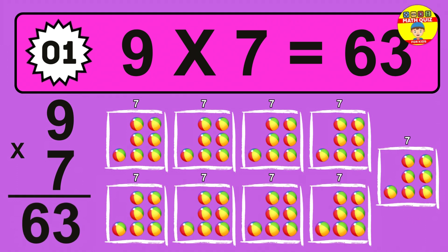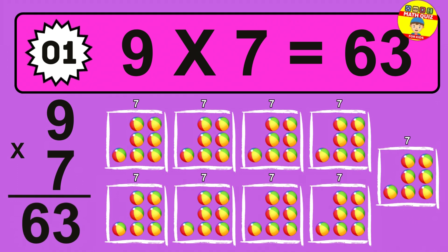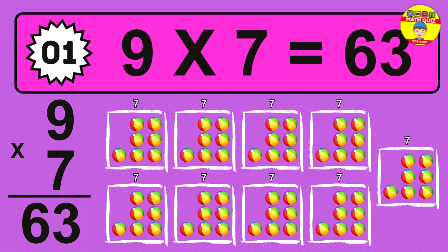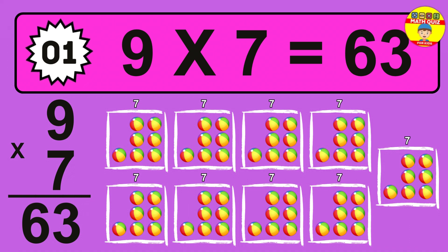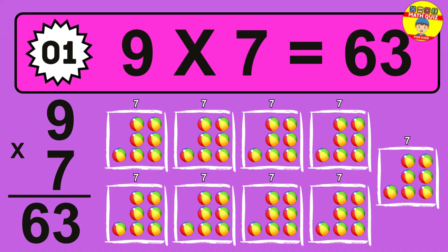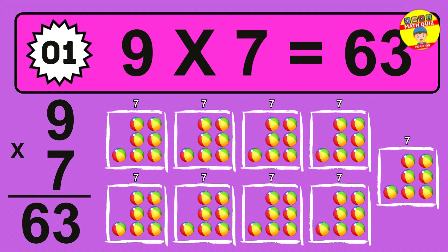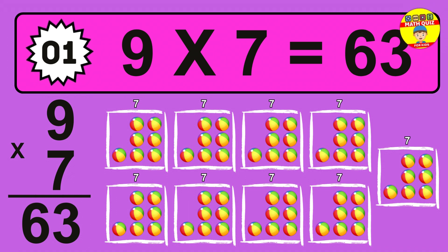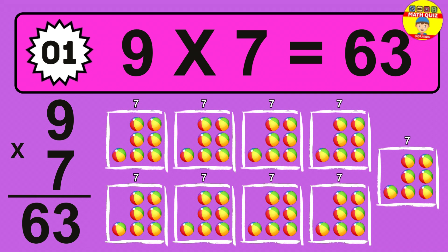The answer is 9 times 7 is 63. To calculate, we have 9 groups with 7 balls each one. So, how many balls do we have? 63 balls.